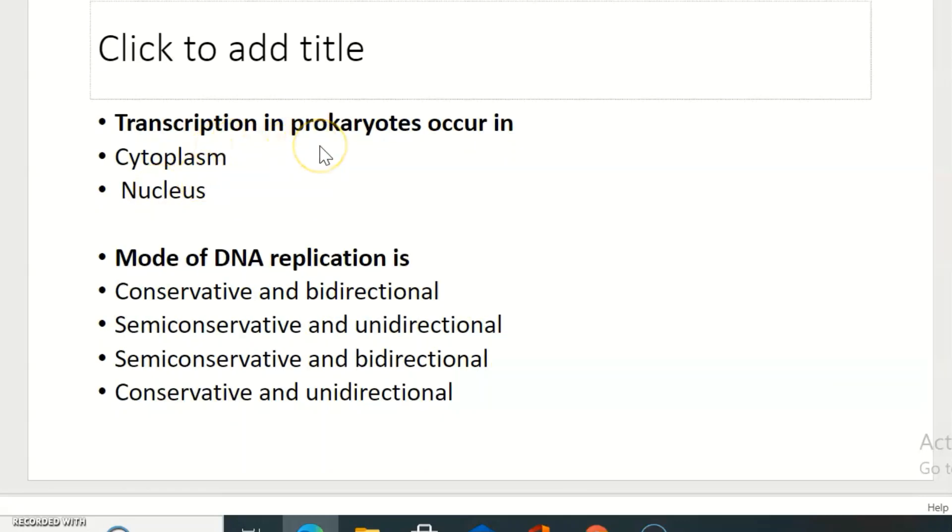Transcription in prokaryotes occur in cytoplasm or nucleus. Transcription in prokaryotes occurs in cytoplasm.